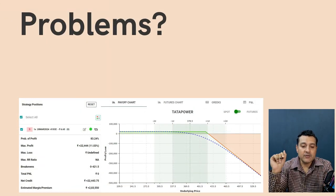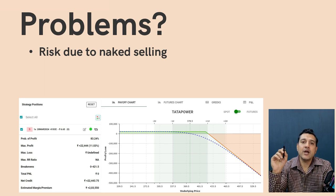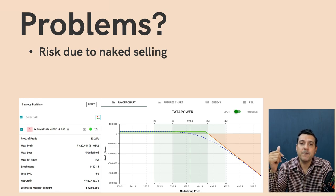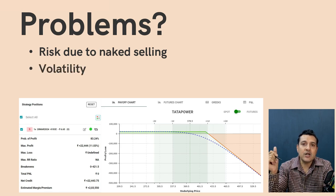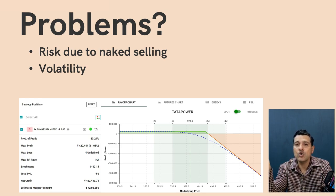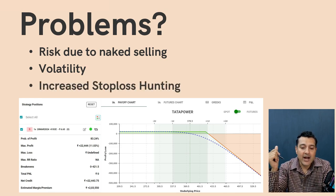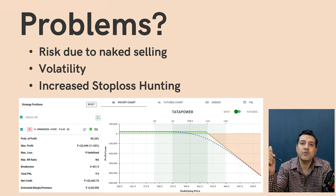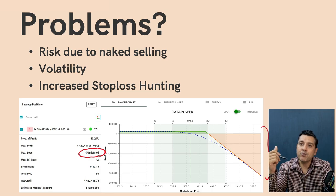Now what are the problems we face? The first problem is that selling naked options entails unlimited risk, but that can be solved by doing spreads — a credit spread like a bull put spread or a bear call spread. Second is volatility: if you are selling an option for Rs. 10, due to volatility, even when your direction is right, price fluctuations can take that option from 10 to 20 to 30, and then suddenly it goes to zero as it approaches expiry. This also leads to increased stop-loss hunting before expiry.